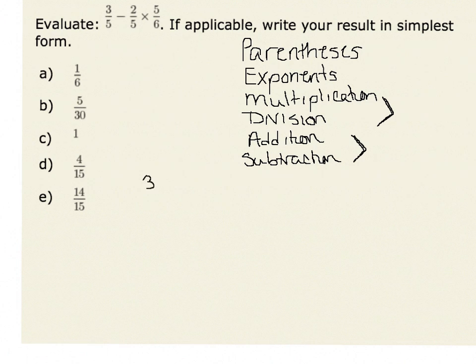Therefore, in our numerical expression 3 fifths minus 2 fifths times 5 sixths, we will recognize that we have to do multiplication before subtraction.